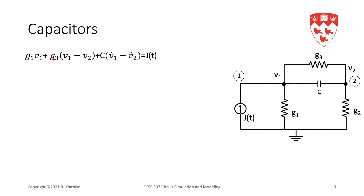The current leaving node 1 through resistor G3 is G3·(V1 − V2). The current leaving node 1 through the capacitor is C multiplied by the derivative of the voltage across the capacitor, so that's V1-dot minus V2-dot. On the right-hand side, we put the currents entering the node through the independent sources, which is J(t). This is my KCL at node 1.